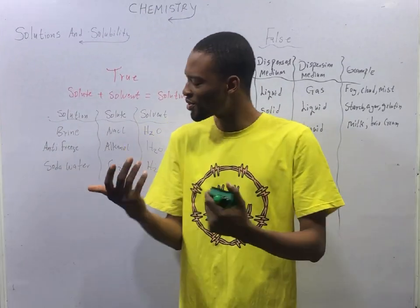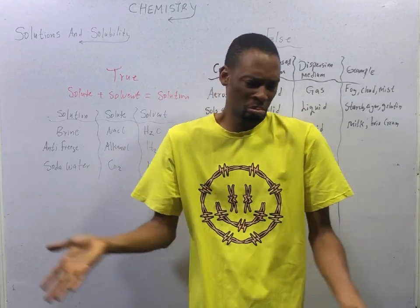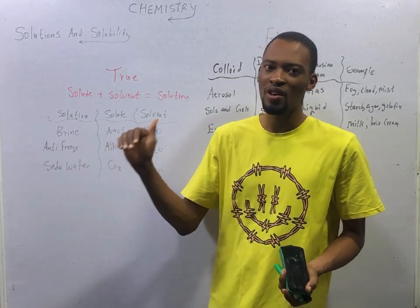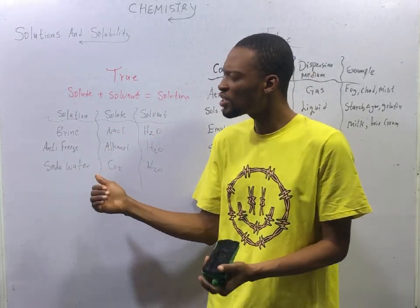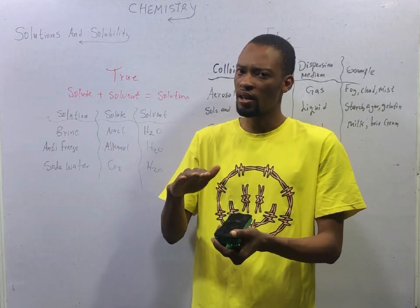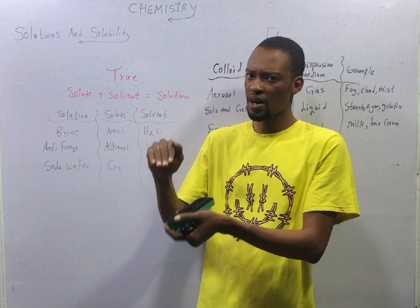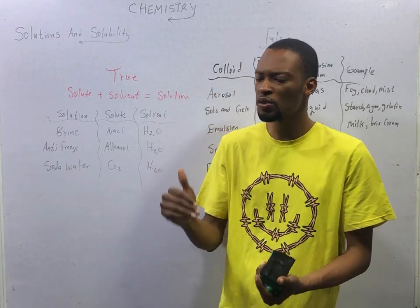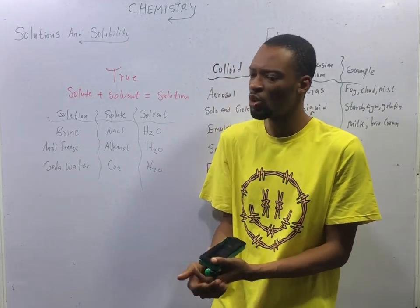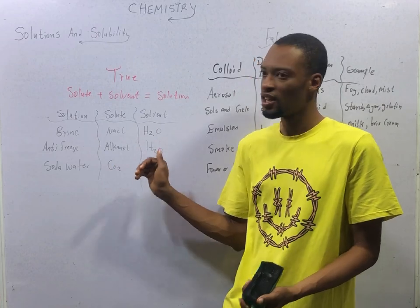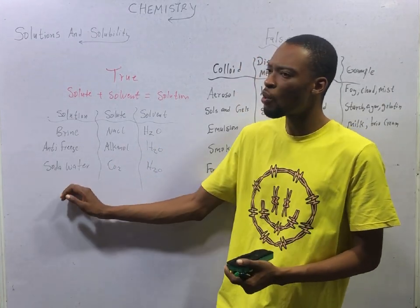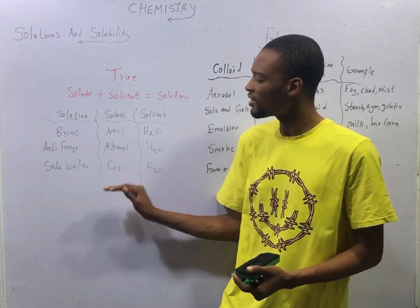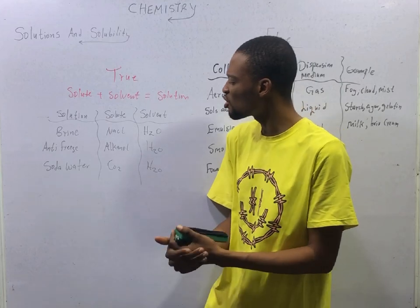Examples of true solution are sugar dissolved in water, salt in water, and brine. Brine is a concentrated solution of sodium chloride dissolved in water, but with more sodium chloride than water. Antifreeze is another example — it is simply ethanol in water. Soda water is carbon dioxide dissolved in water, and that is a true solution with the properties of true solution.